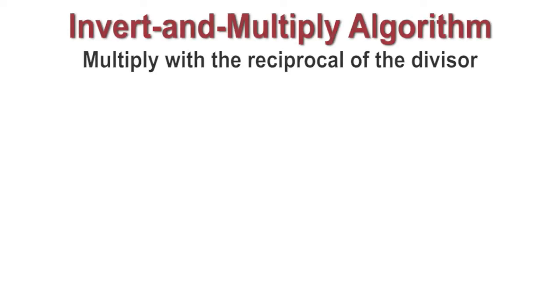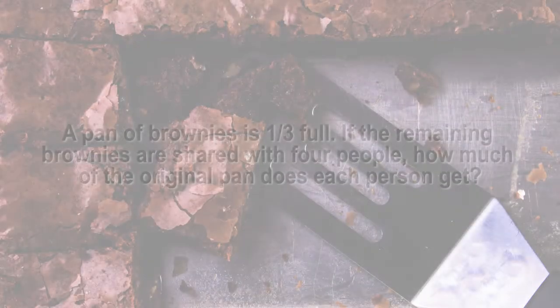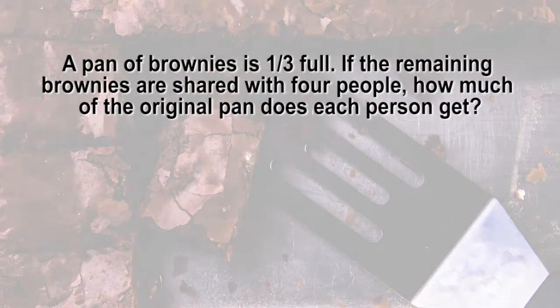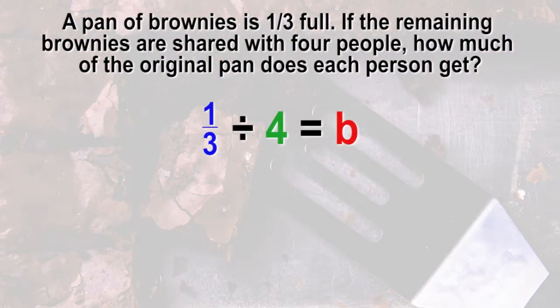The invert and multiply algorithm is very helpful with the partitive or sharing interpretation of division. Let's try a problem. A pan of brownies is 1/3 full. If the remaining brownies are shared with four people, how much of the original pan does each person get? The division equation is 1/3 divided by 4 equals b.